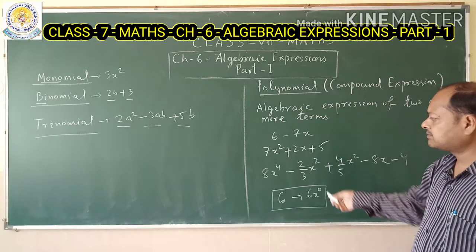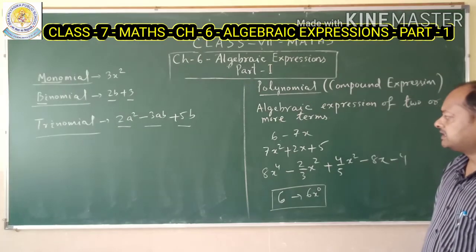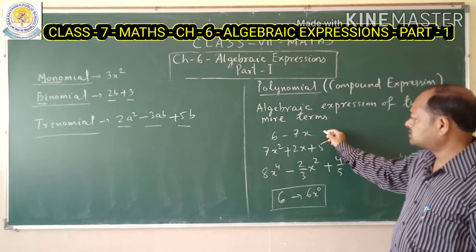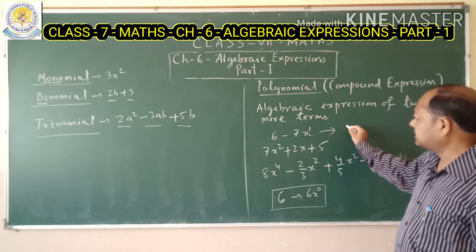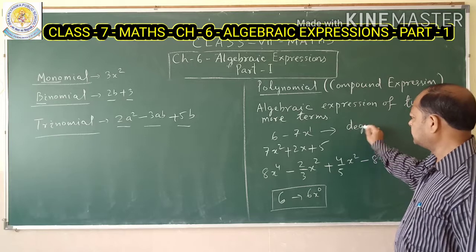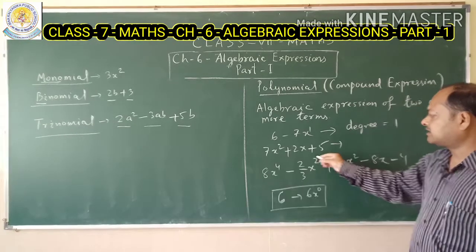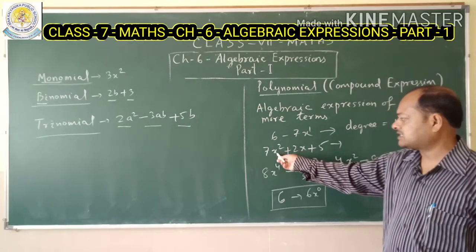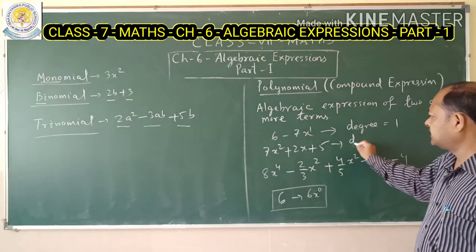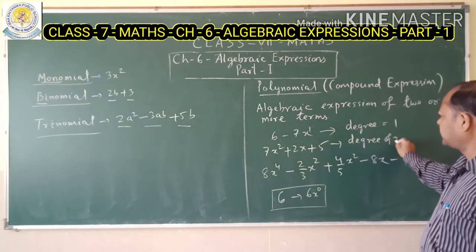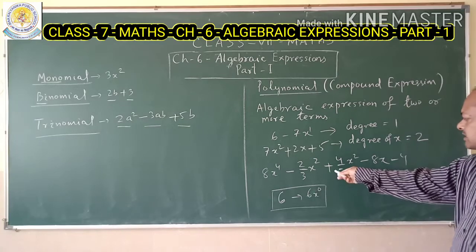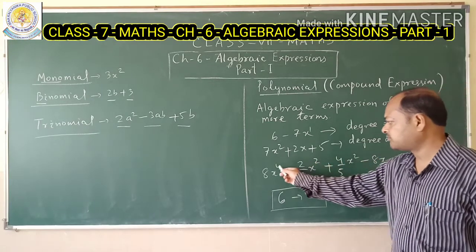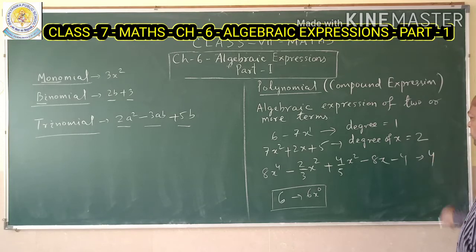Now let's discuss degree. Degree means the highest power in a polynomial. For example, in the expression x, the degree is 1. In 7x² plus 2x plus 5, the highest power of x is 2, so the degree is 2. In a longer expression where the powers are 1, 2, 2, 2, and 4, the highest power is 4, so the degree is 4.